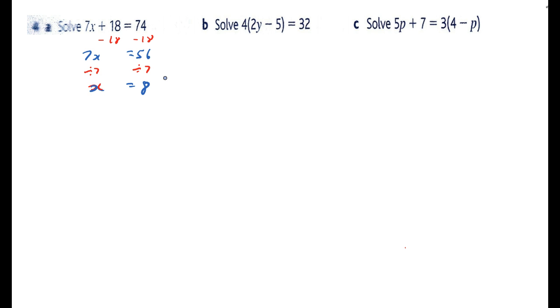This one here I could divide both sides by 4 to start off with, but I'm actually going to multiply out the brackets. 4 lots of 2y will be 8y, 4 lots of minus 5 will be minus 20, and that equals 32.